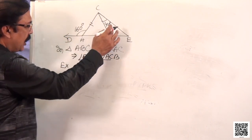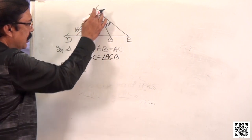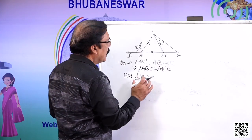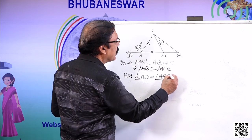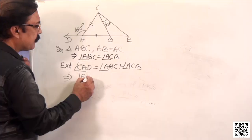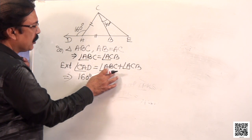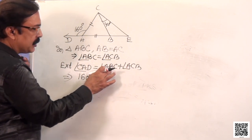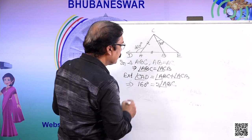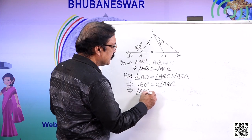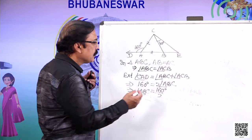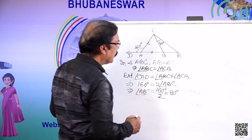The exterior angle of this triangle is angle CAD. By the exterior angle theorem, angle CAD is equal to angle ABC plus angle ACB. Substituting the value of angle CAD as 160 degrees, and since ABC equals ACB, we can write 2·ABC equals 160 degrees. Therefore angle ABC is equal to 80 degrees.